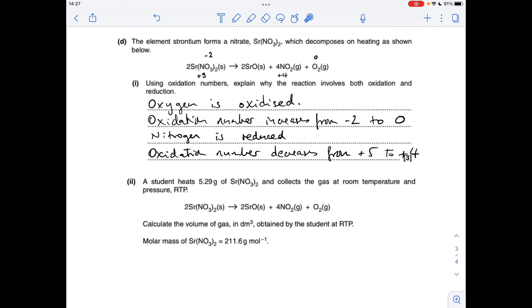So we'll start with oxygen. Oxygen's been oxidized, its oxidation number's increased from -2 to 0. Nitrogen has been reduced, its oxidation number's decreased from +5 to +4.